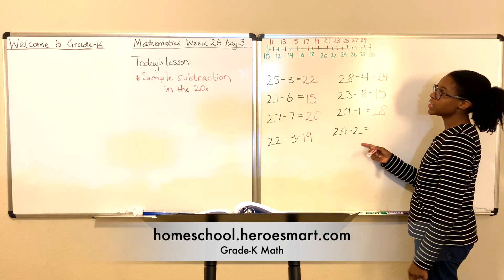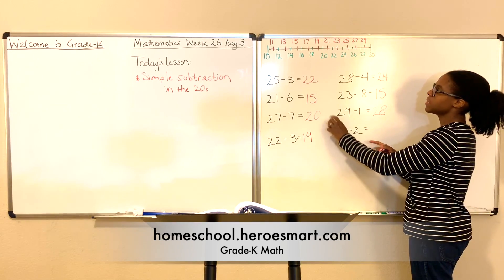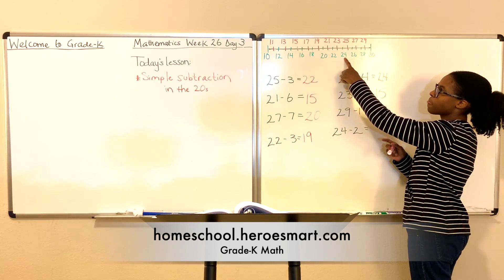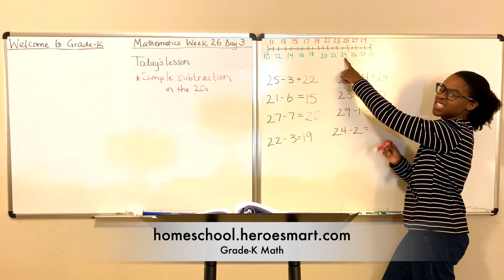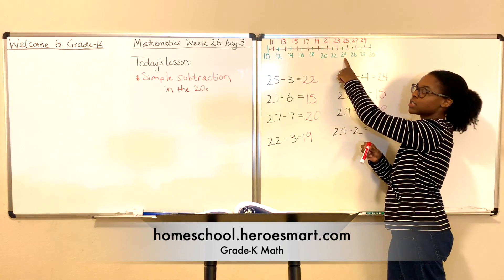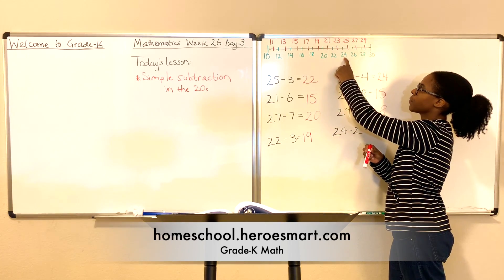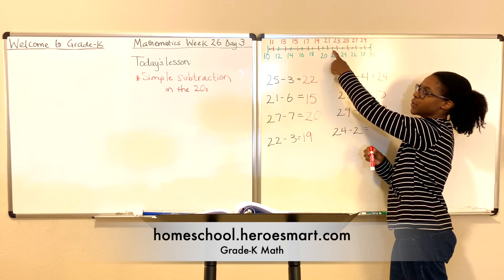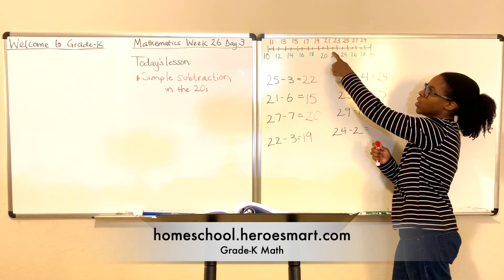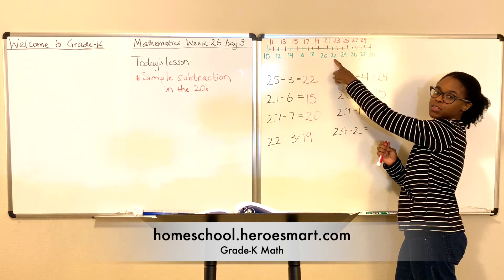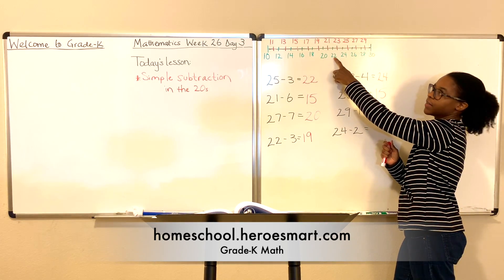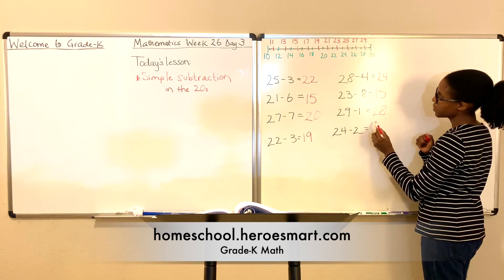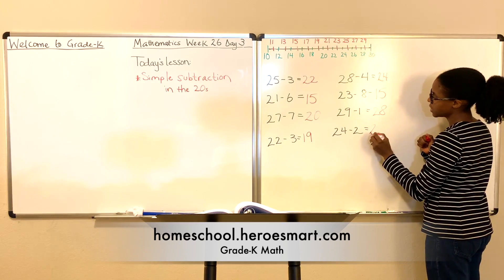24 minus 2. Come up to the number line, find 24, and then subtract 2: one, two. What number did we land on? We landed on the number 22.